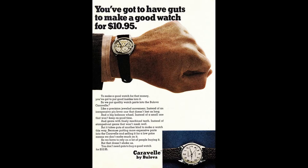To make a good watch for that money, you've got to put good insides into it. So we put quality watch parts into the Bulova Caravelle. Like a precision jeweled movement, instead of an inexpensive pin lever one that doesn't last as long. And a big balance wheel, instead of a small one that won't keep as good time. And gears with finely machined teeth, instead of stamped out gears that won't mesh well. Because putting more expensive parts into a Caravelle and selling it for a low price means we don't make much on it.